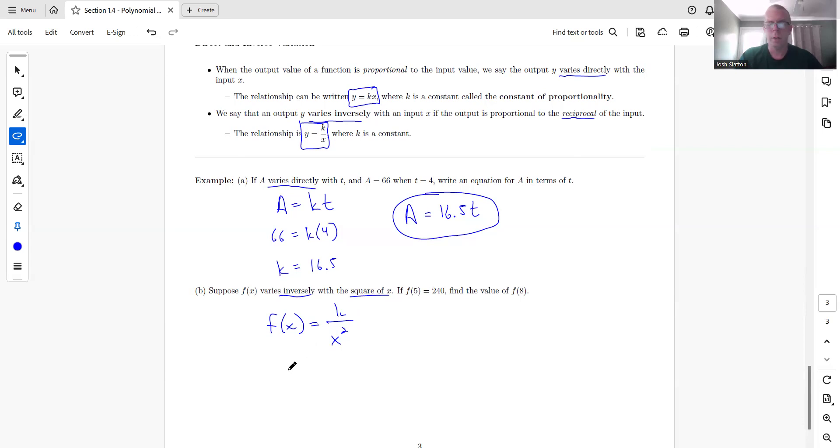F of 5 is 240. So let's figure out what K is. And I believe that comes to 6,000. I should have written that should be 5 squared, but 5 squared is 25. So 6,000 equals K.